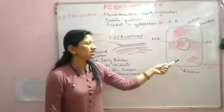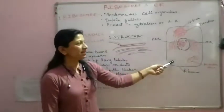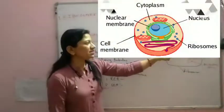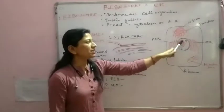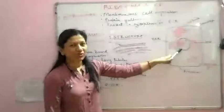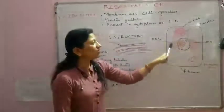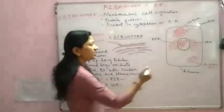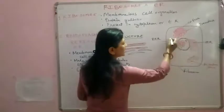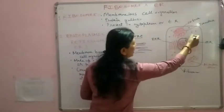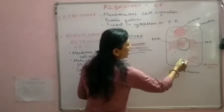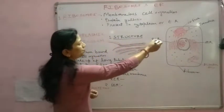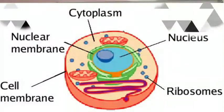Okay students, this is the diagram of the cell in front of you all. You can see that at the center there is the nucleus. Now, what are ribosomes actually known as? They are known as ribosomes.